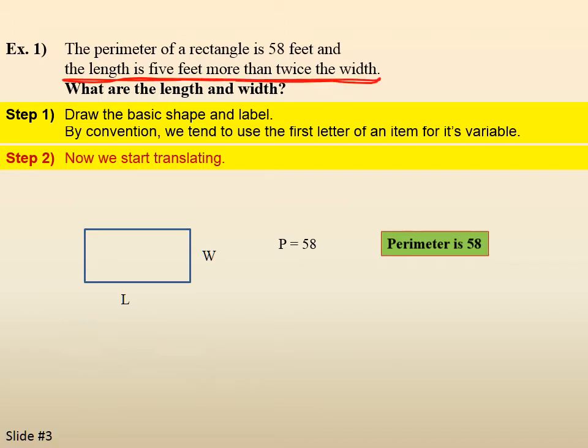Then it says the length is 5 feet more than twice the width. Well, the first word is is, which means equals, so the length equals, or L equals. Twice the width means 2 times the width. So, we would translate that phrase as 5 more than twice the width. So, 2W plus 5.